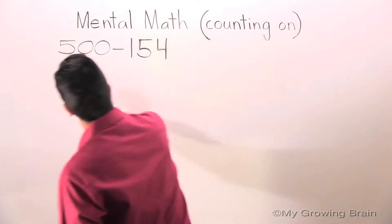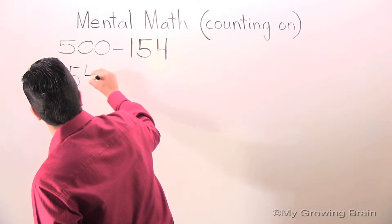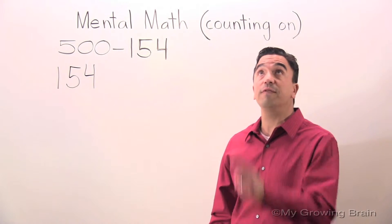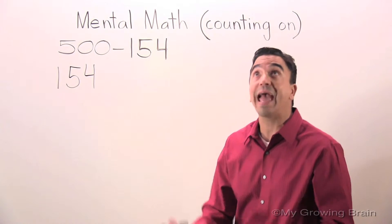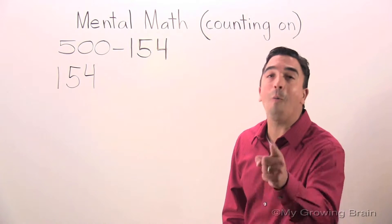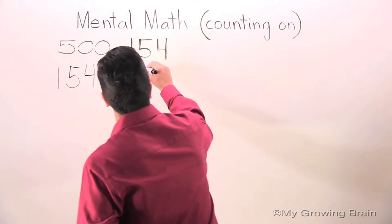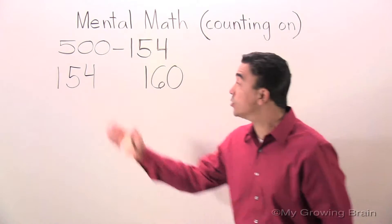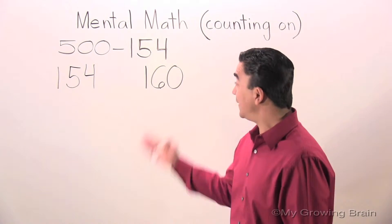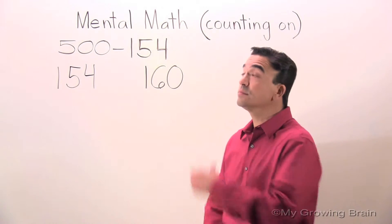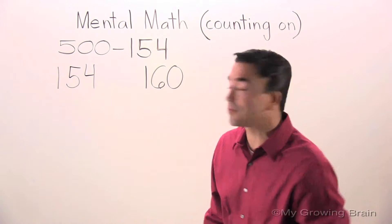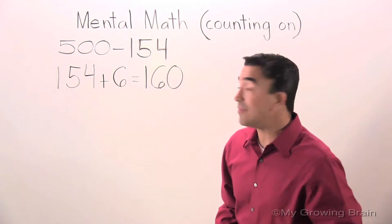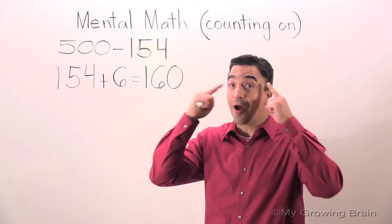154. I am going to round 154 up to the nearest ten, which is 160. 154 plus what equals 160? Six. Let's store the six in our growing brains.